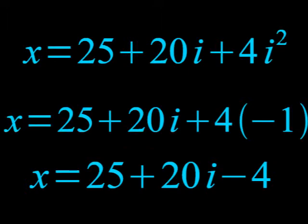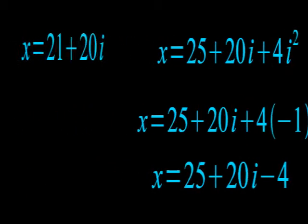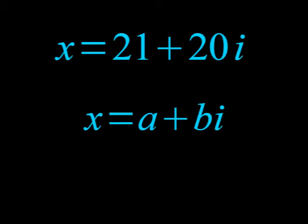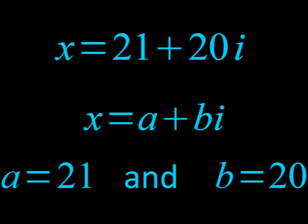At this point, we can combine like terms, giving ourselves X equals 21 plus 20i. This looks an awful lot like our standard form of A plus BI, where A is 21 and B is 20.